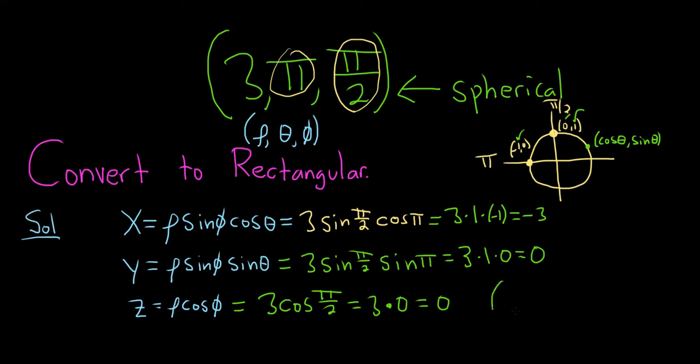So the final answer is going to be (-3, 0, 0). That would be the final answer in rectangular coordinates. I hope this video has been helpful.